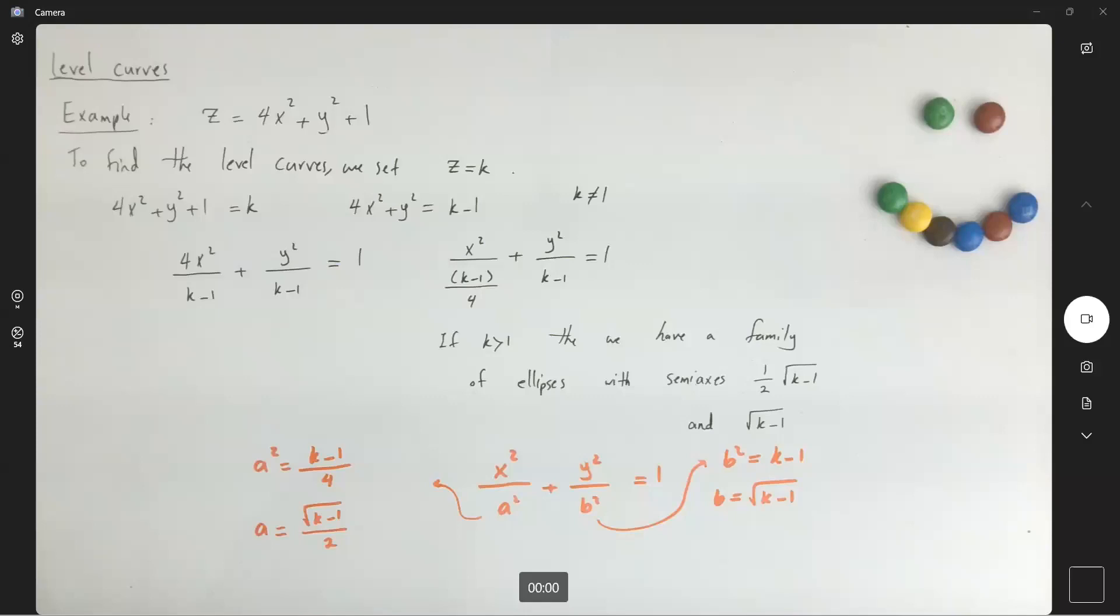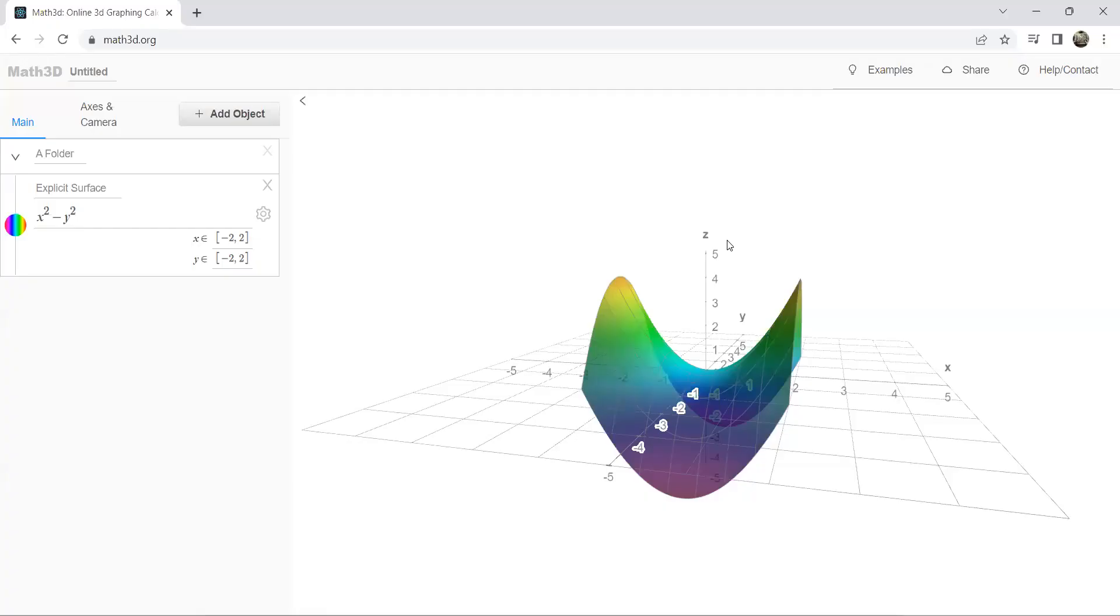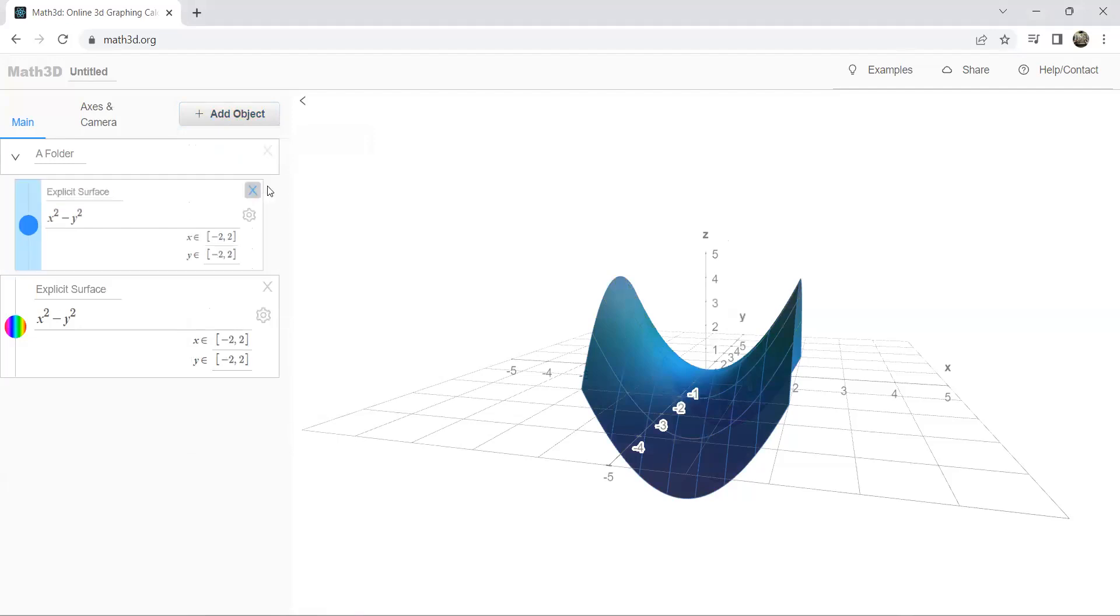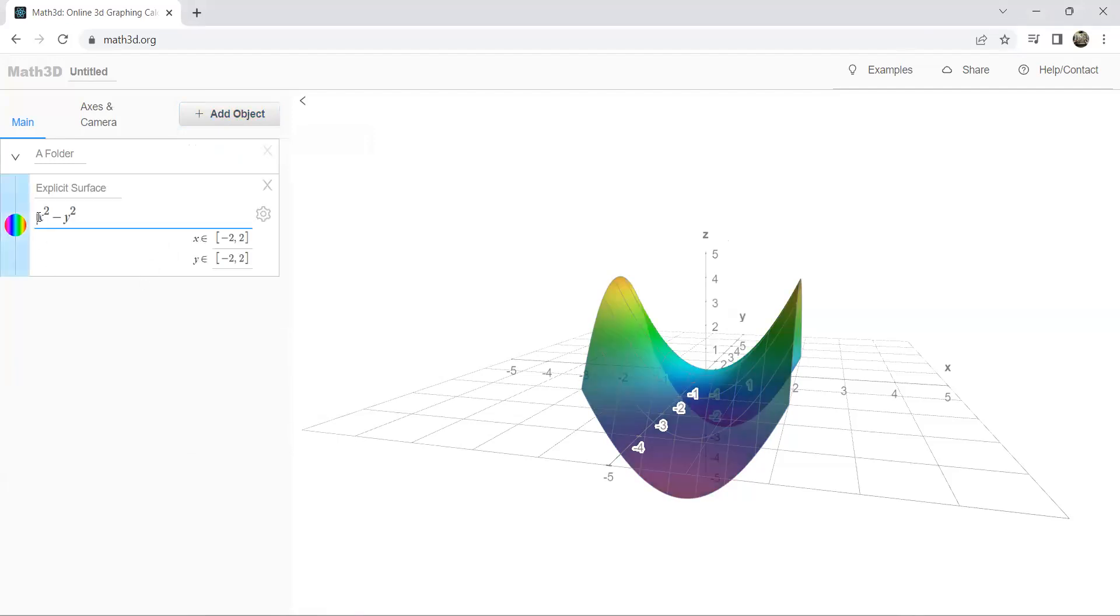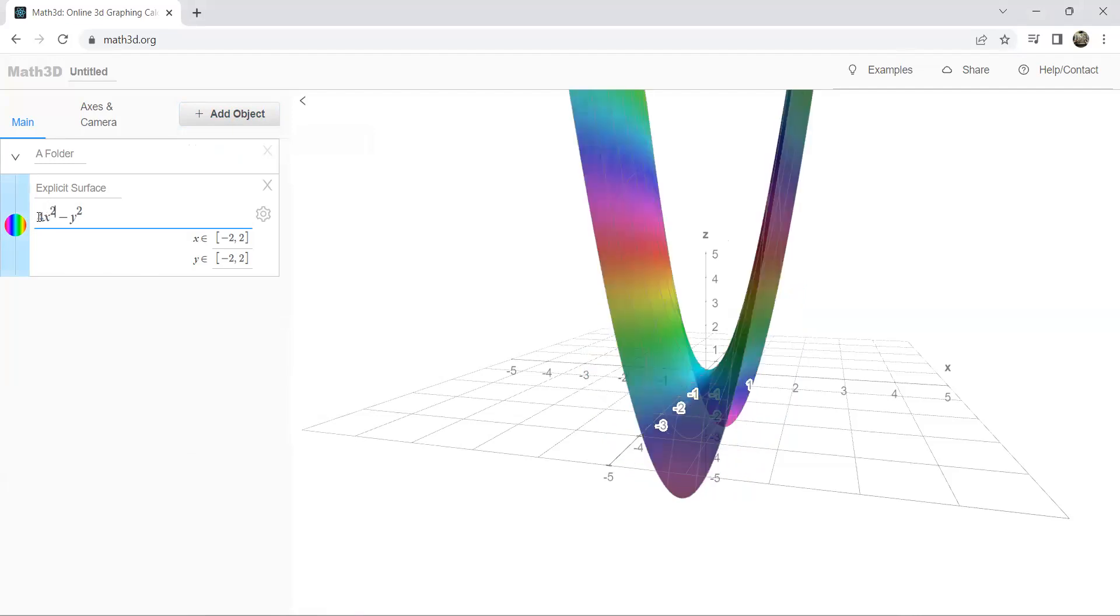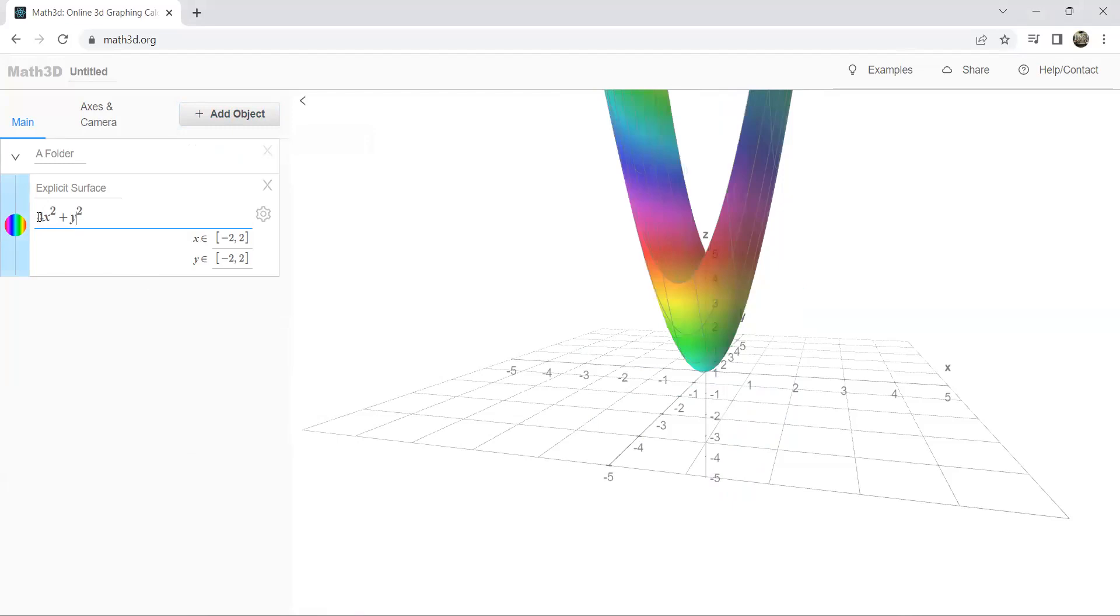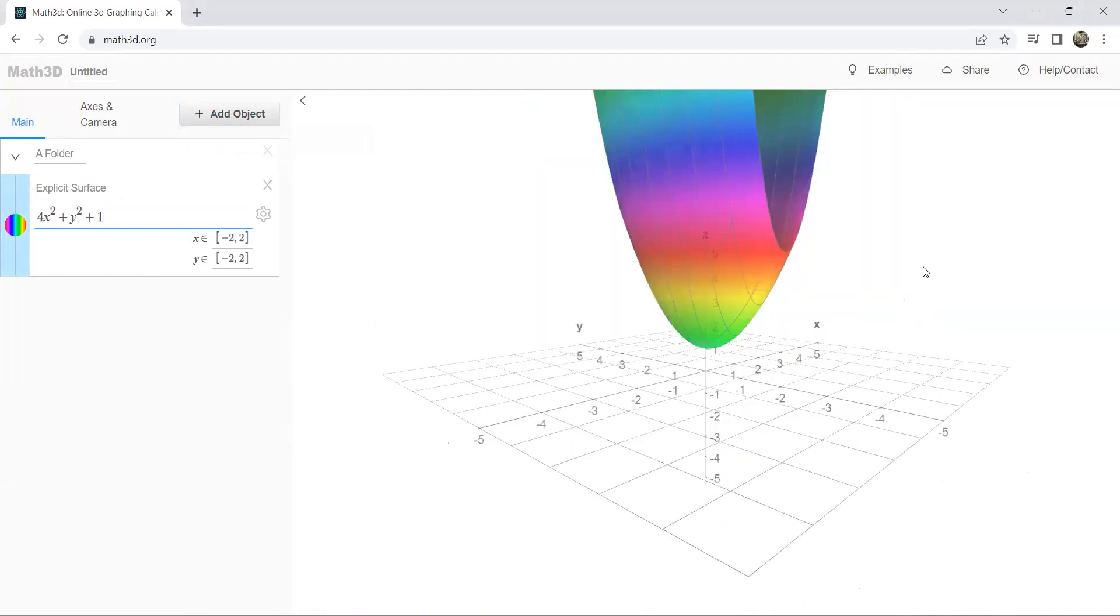Let's take a look at our Math3D. Let us add an object, our explicit surface that we are using. In that case, here we have 4x squared plus y squared plus 1. So there you can see the behavior of this surface in three dimensions.